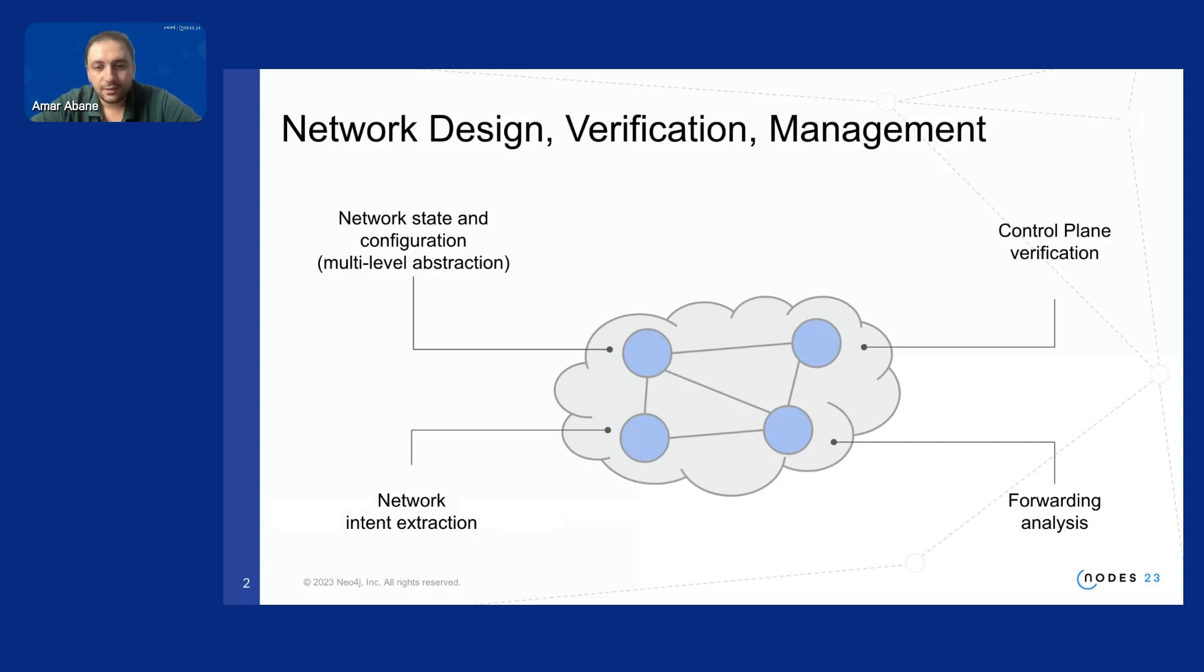And then we can verify reachability or detect loops or these kind of things and there is another feature that may be appreciated but less used than the three previous ones which is an extraction of network intent can be used for documentation for example to generate documentation or description of the network to know some characteristics of the network.